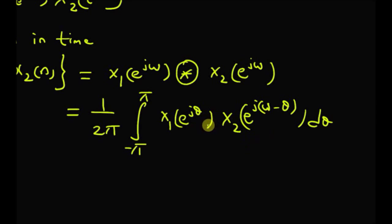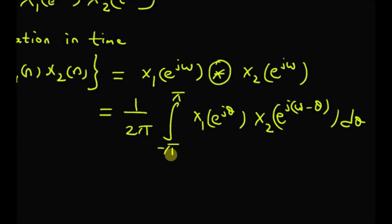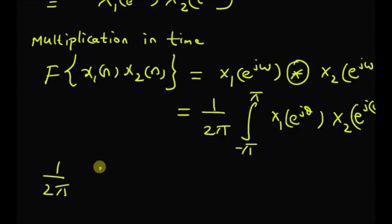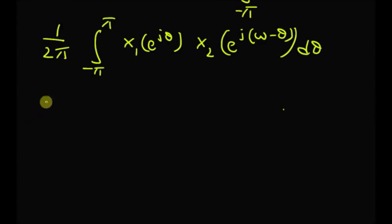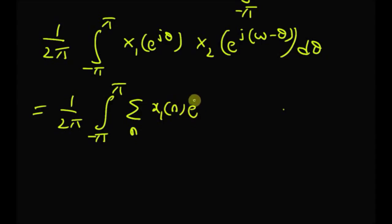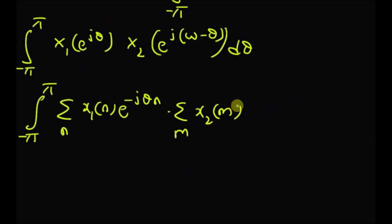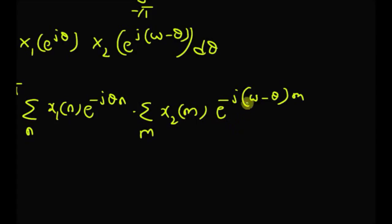This is the definition of periodic convolution. To prove this property, we start with the RHS, that is the definition of periodic convolution: (1/2π) ∫_{−π}^{+π} X1(e^jθ) · X2(e^{j(ω−θ)}) dθ. By using the definition of DTFT, we write X1(e^jθ) as the summation over n of x1(n)e^(−jθn), and X2(e^{j(ω−θ)}) as the summation over m of x2(m)e^{j(ω−θ)m}, followed by dθ.